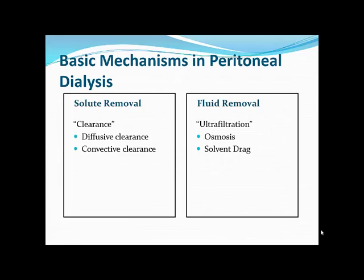In peritoneal dialysis there are two goals: waste solute removal and fluid removal. These are accomplished by four basic mechanisms. Solute removal or clearance is achieved through diffusive clearance — diffusion across a concentration gradient — or convective clearance. Fluid removal, or ultrafiltration, is accomplished by osmosis and solvent drag.